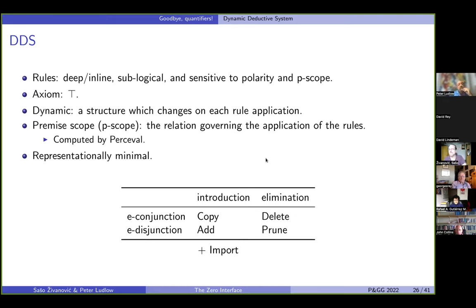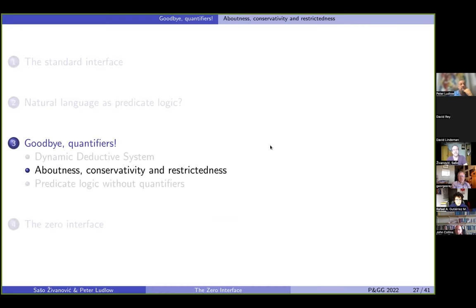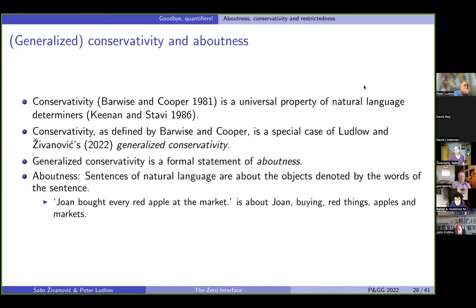We could also say that this is Percival's first job in the service of our DDS, but we will soon give him another job because we will talk about aboutness, conservativity, and restrictedness. So you are probably familiar with conservativity as defined by Barwise and Cooper, and then later proposed to be a universal property of natural language determiners by Keenan and Stavi. I think this is everybody these days agrees that this is really a universal that has stood the test of time.